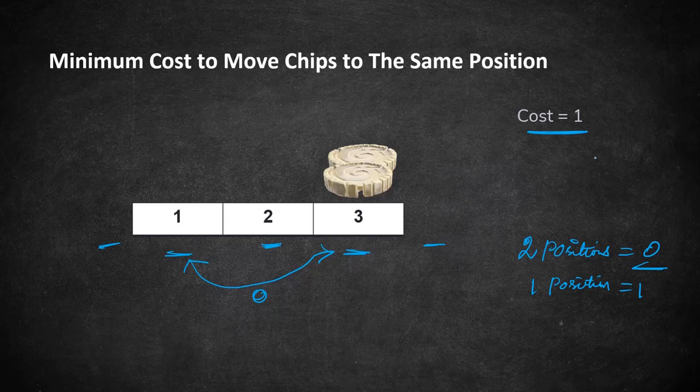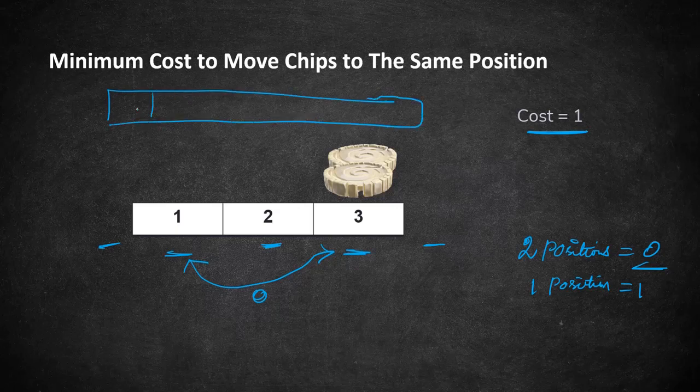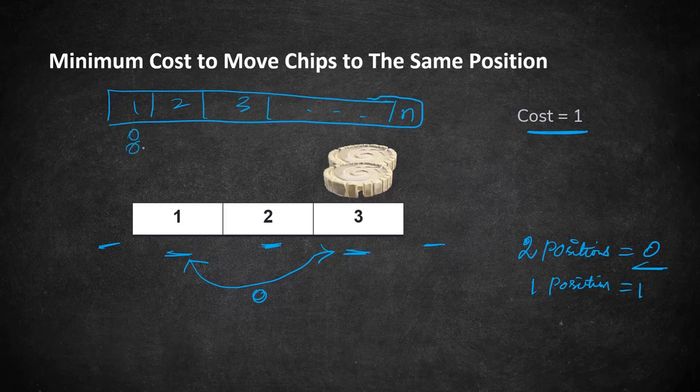So this is a pretty simple logic, that is why it is in an easy category problem. To understand how we are going to solve this, consider there are n number of positions and each position is having n number of coins. So in each position there are multiple coins.